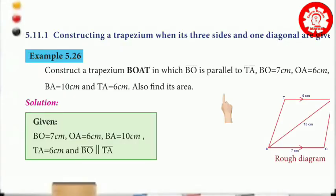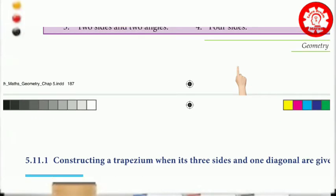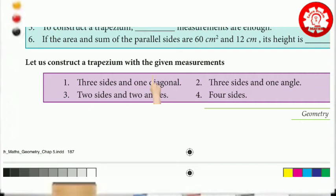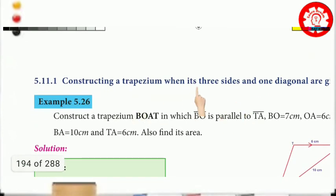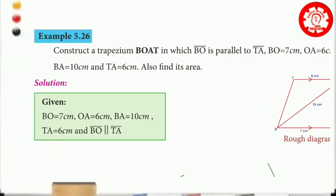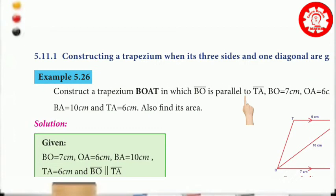Hello students. In video number 8 of chapter 5, we'll talk about how to construct a trapezium. This is the first model and first type of construction. We'll talk about the first method of this topic — three sides and one diagonal. This is the first method of trapezium construction. Here we see Example 5.36.